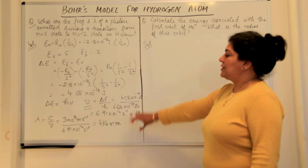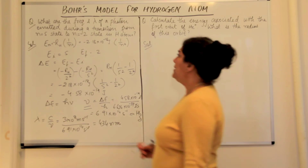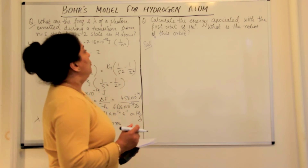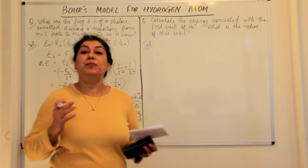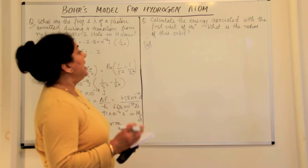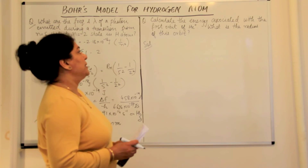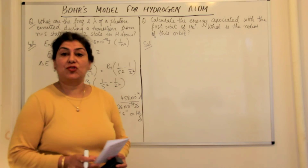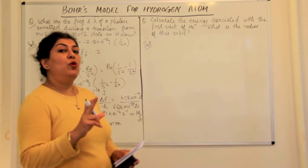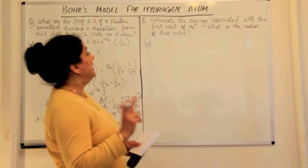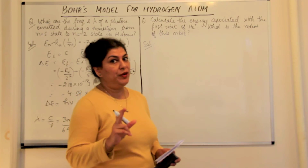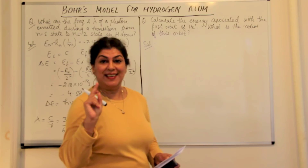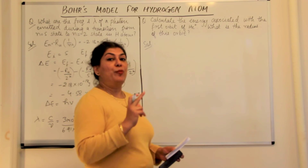So this was question 1. The next question is: calculate the energy associated with the first orbit of He⁺. What is the radius of this orbit? You have to calculate the energy first, then the radius. The atom is not hydrogen — it is helium positive, He⁺. What comes into the formulae now is the value of Z, the atomic number.